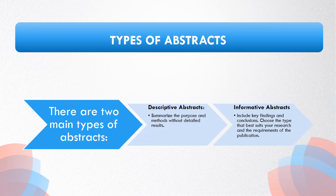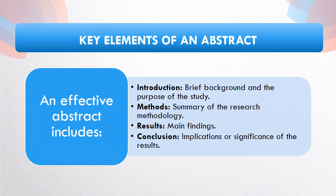There are two main types of abstracts: descriptive and informative. Descriptive abstracts succinctly summarize the purpose and methods of the research without detailed results, making them shorter and less specific. Informative abstracts, in contrast, include key findings and conclusions, providing a comprehensive overview of the research's significance and implications. When selecting between these types, consider the scope of your research and the guidelines of your publication or conference to ensure your abstract effectively communicates the essence of your study to the intended audience.